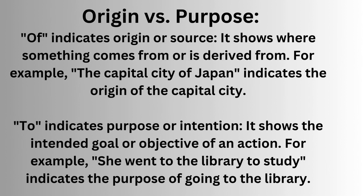Origin versus purpose. 'Of' indicates origin or source — it shows where something comes from or is derived from. For example, 'the capital city of Japan' indicates the origin of the capital city. 'To' indicates purpose or intention — it shows the intended goal or objective of an action. For example, 'she went to the library to study' indicates the purpose of going to the library.